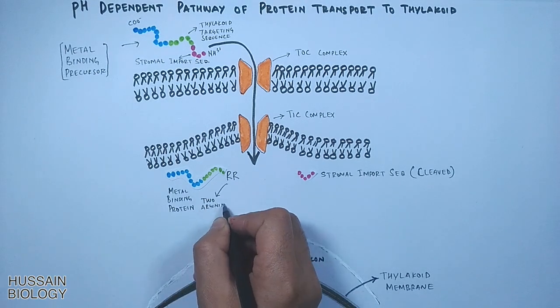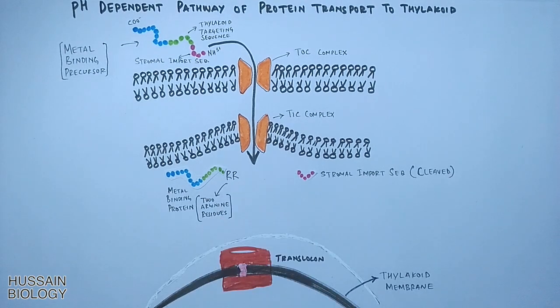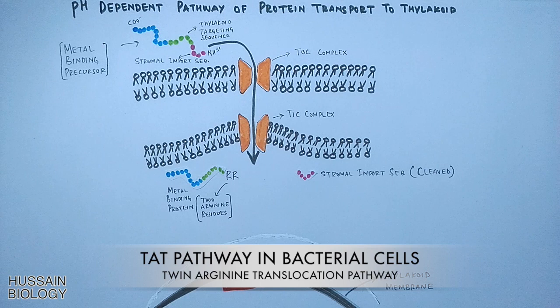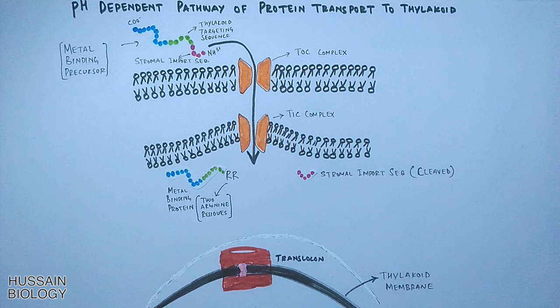These arginine residues are crucial for recognition. Bacterial cells use the same mechanism of translocating proteins, known as the TAT pathway — the Twin Arginine Translocation pathway. For this pathway we need two arginine residues (RR) at the N-terminus of the thylakoid targeting sequence, and we also need a pH gradient across the membrane.